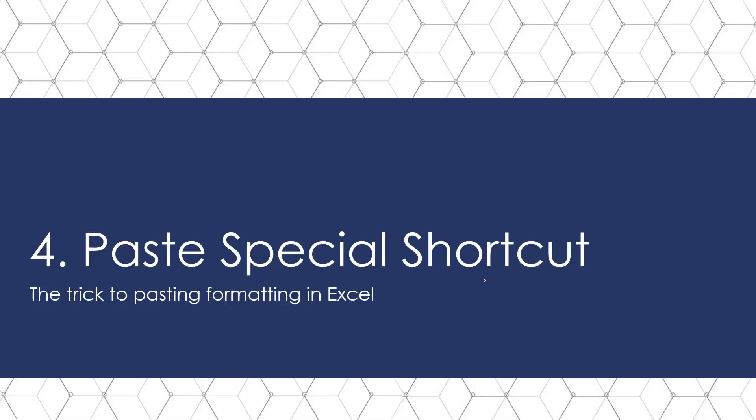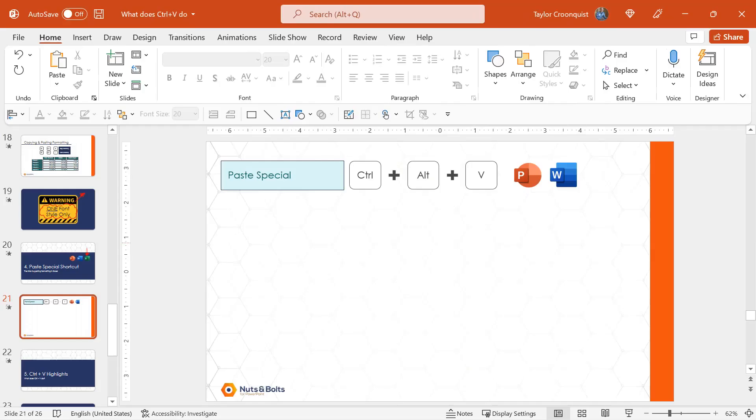One warning when using Control Shift C and Control Shift V to copy and paste an object's formatting: it only holds one font style at a time. Finally, let's talk about the paste special shortcut, which is the key to copying and pasting formatting with shortcuts in Microsoft Excel.